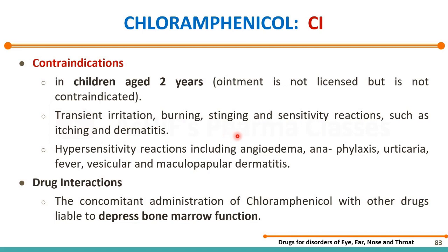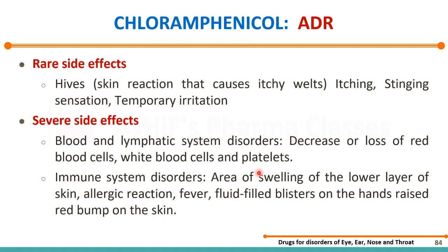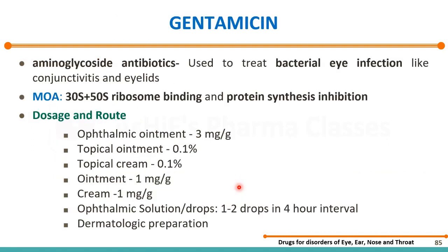There is a serious problem of bone marrow suppression associated with chloramphenicol. Along with bone marrow dysfunction, ADRs include rare skin reactions, itching, stinging sensation, and temporary irritation. In severe reactions, it can cause effects on blood cells — lymphocytes and RBCs — causing bone marrow suppression and immunosuppression.